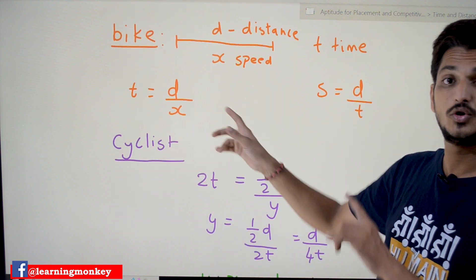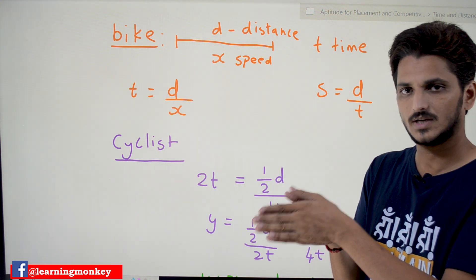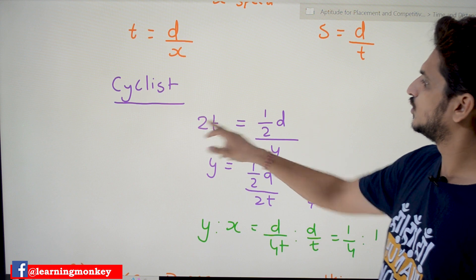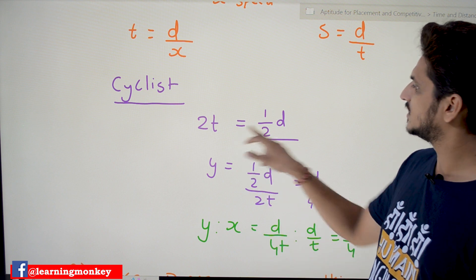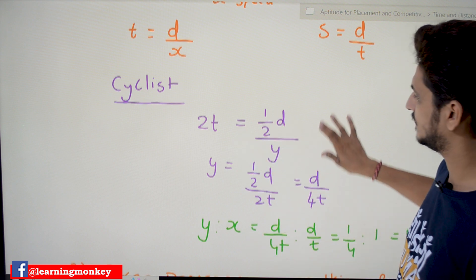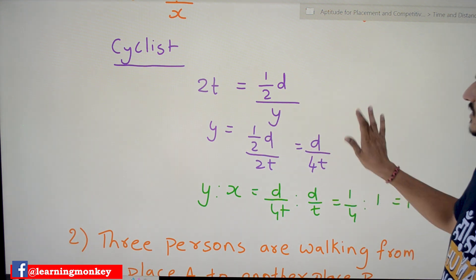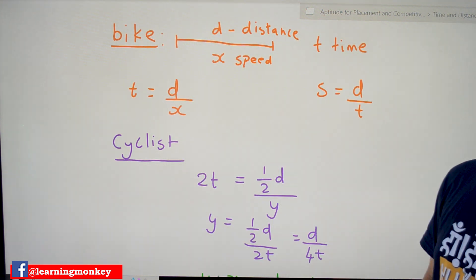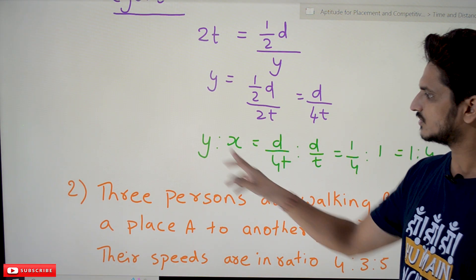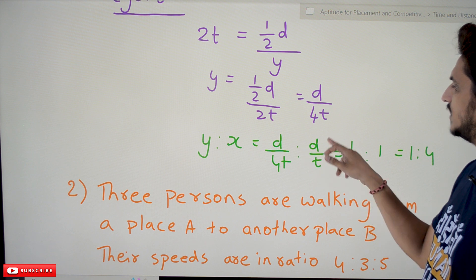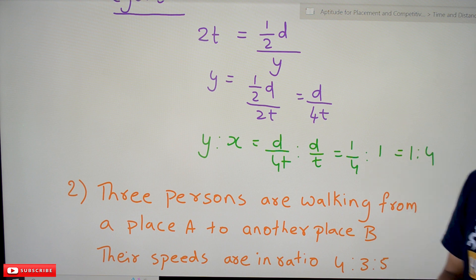The cyclist covers half the distance in double the time, so time = 2t and distance = d/2. Assuming the cyclist's speed is y, we get y = (d/2) / (2t) = d/4t. We now know: speed of bike x = d/t, speed of cyclist y = d/4t. The ratio of cyclist to bike is y:x = (d/4t) : (d/t). Cancelling d and t gives 1/4 : 1, which is 1:4.